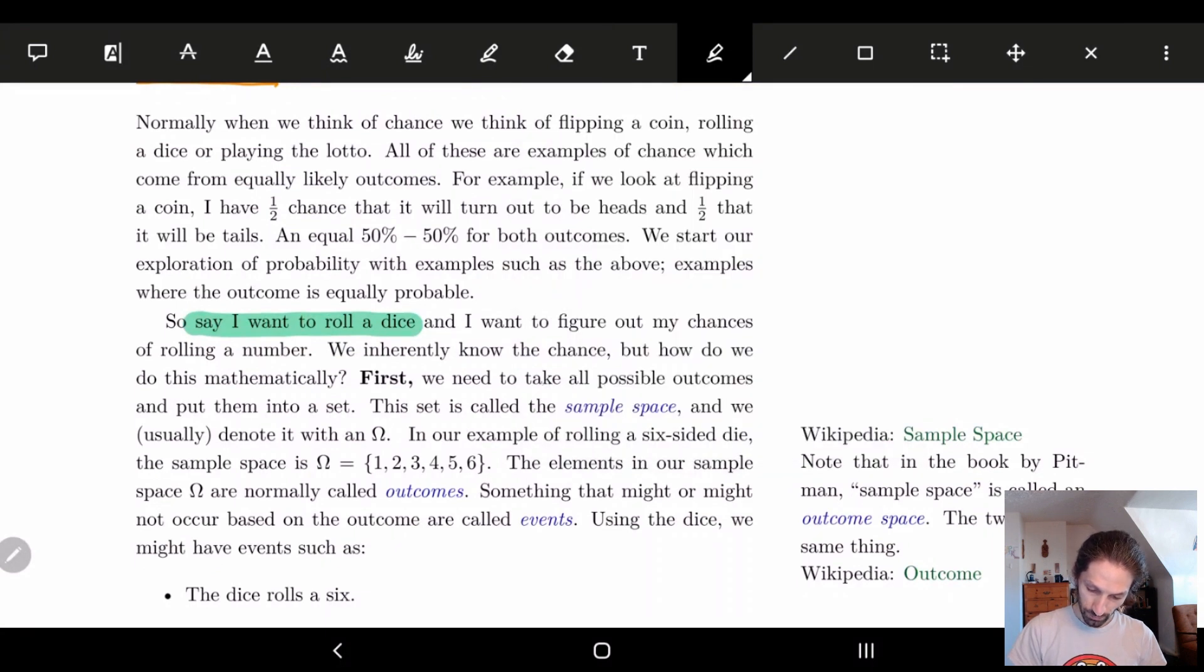We take all possible outcomes and put them into a set. This set is called the sample space because it's basically what we are going to sample from. We usually denote it with omega. An omega normally in the text is going to mean sample space. If you're following along in the book, note that the book calls it an outcome space.